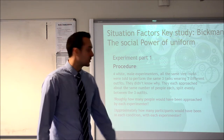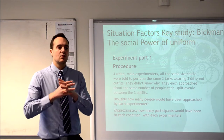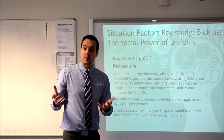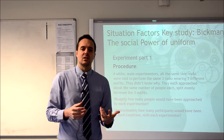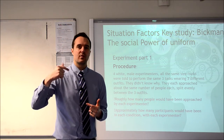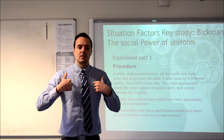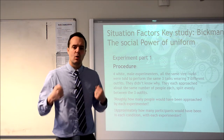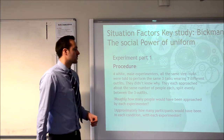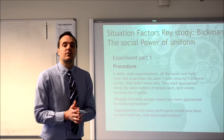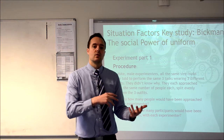Onto the procedure. There were actually four confederates, not three. They were in the experiment but they hadn't written the study - they were nothing to do with Bickman and didn't actually know what the purpose of the study was. That was done deliberately to try and avoid demand characteristics or experimental bias, where the people acting might behave differently because they knew the hypothesis. For example, if you knew the purpose of the study, when wearing the guard uniform you might be more assertive and speak more confidently, which could affect obedience beyond just the uniform. They were also all the same size and build, since someone physically intimidating might influence obedience independently.